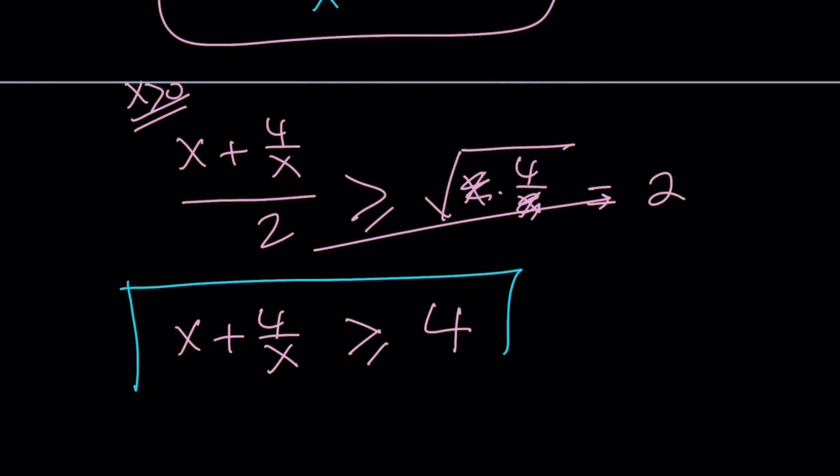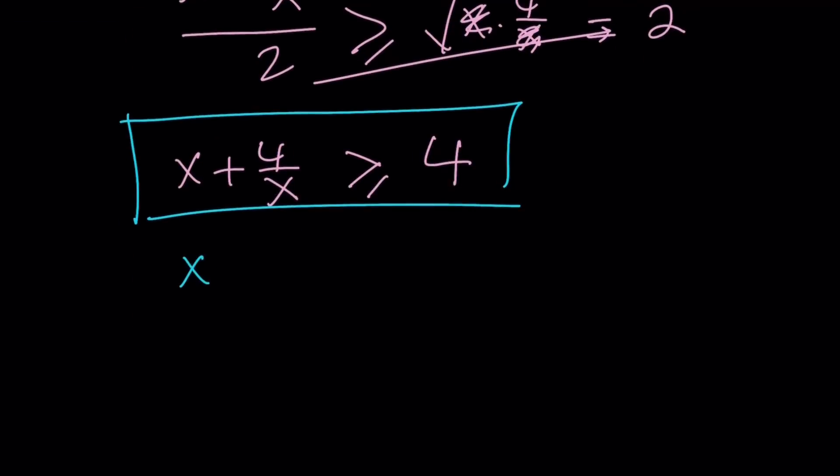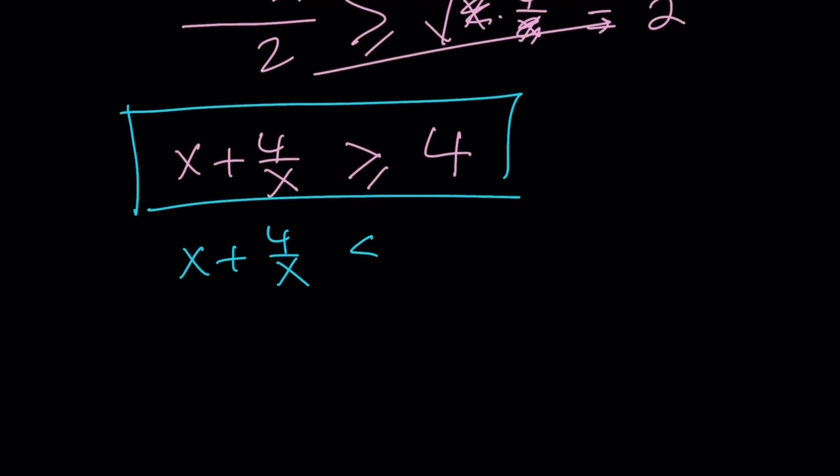We're going to put those two inequalities side by side. The x's cancel out, which leaves us nicely with a 2 here. If you cross multiply, 2 times 2 is 4, and this gives us x plus 4 over x is greater than or equal to 4. When you take it with the other inequality, the top inequality was x plus 4 over x is less than or equal to 4.